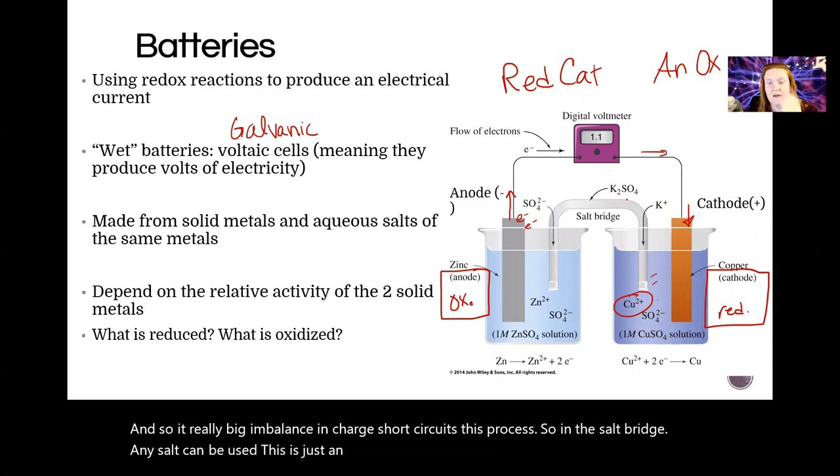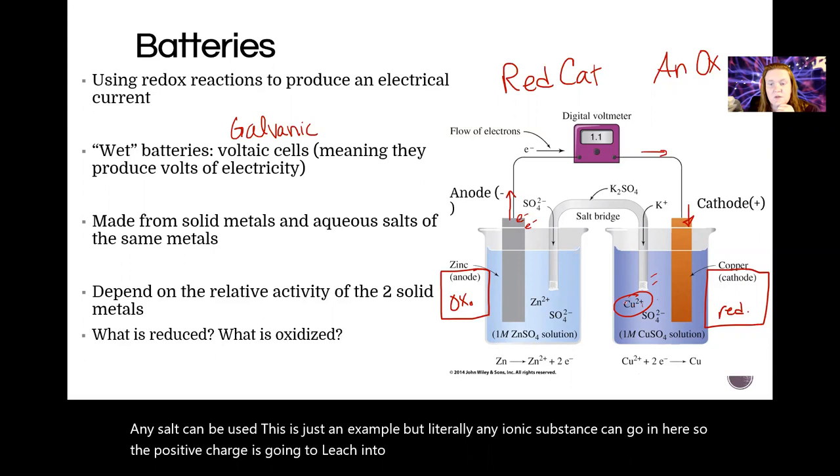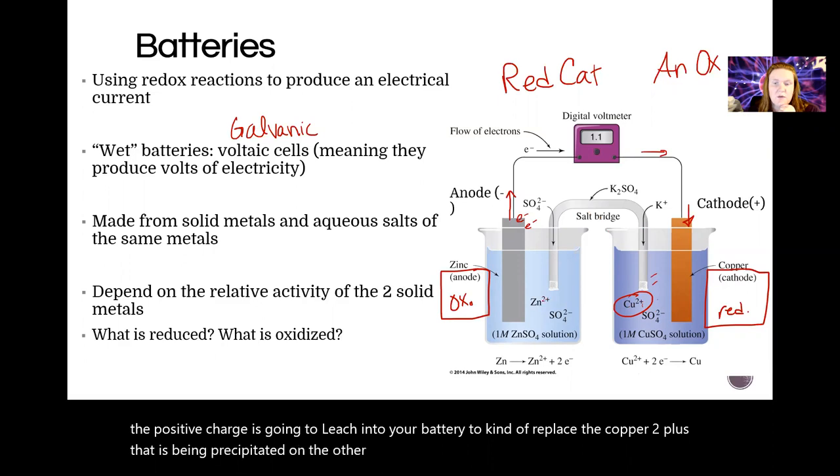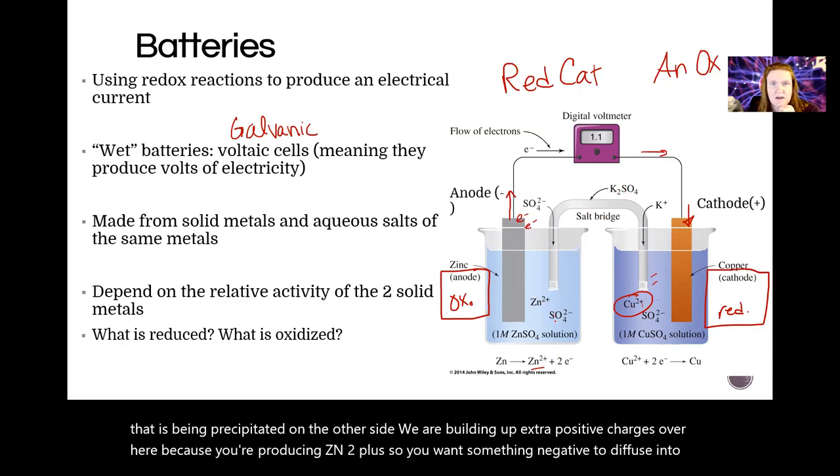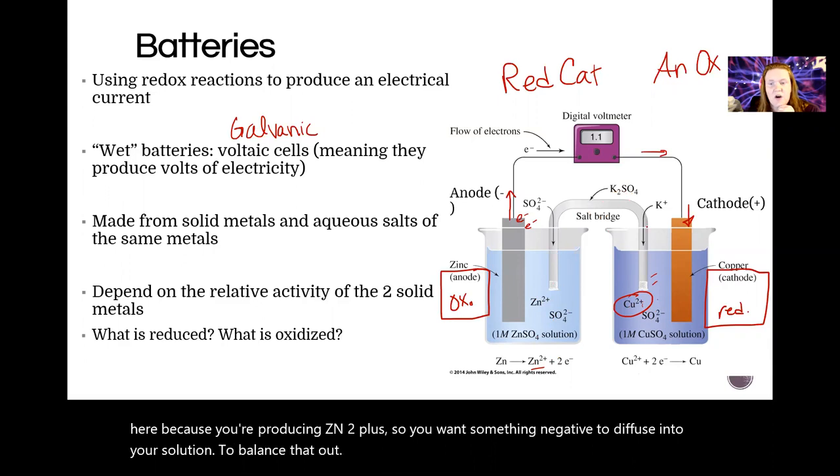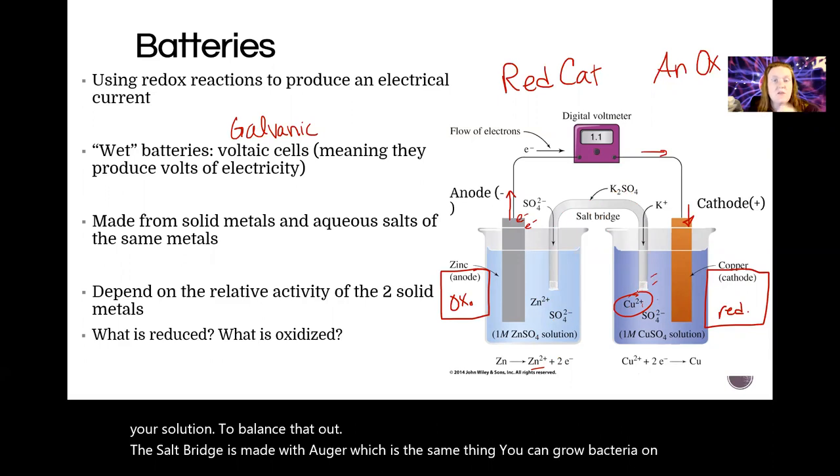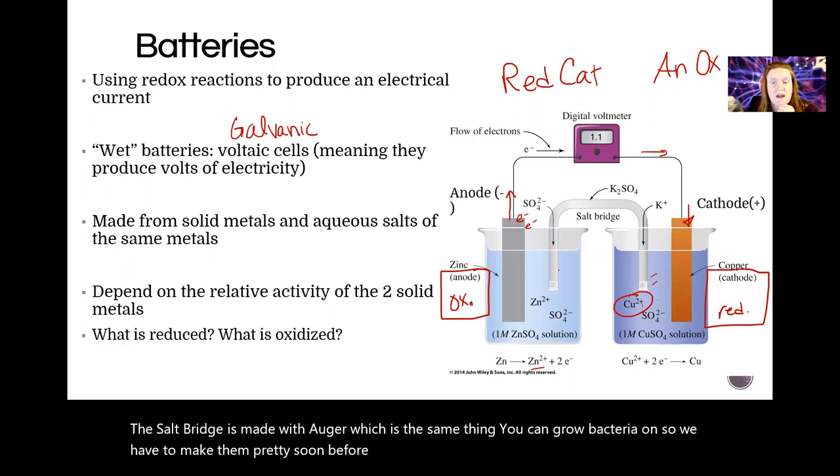So the positive charges are going to leach into your battery to kind of replace the copper 2+ that is being precipitated. On the other side we are building up extra positive charges over here because you're producing Zn2+, so you want something negative to diffuse into your solution to balance that out. The salt bridge is made with agar which is the same thing you can grow bacteria on, so we have to make them pretty soon before your experiment.